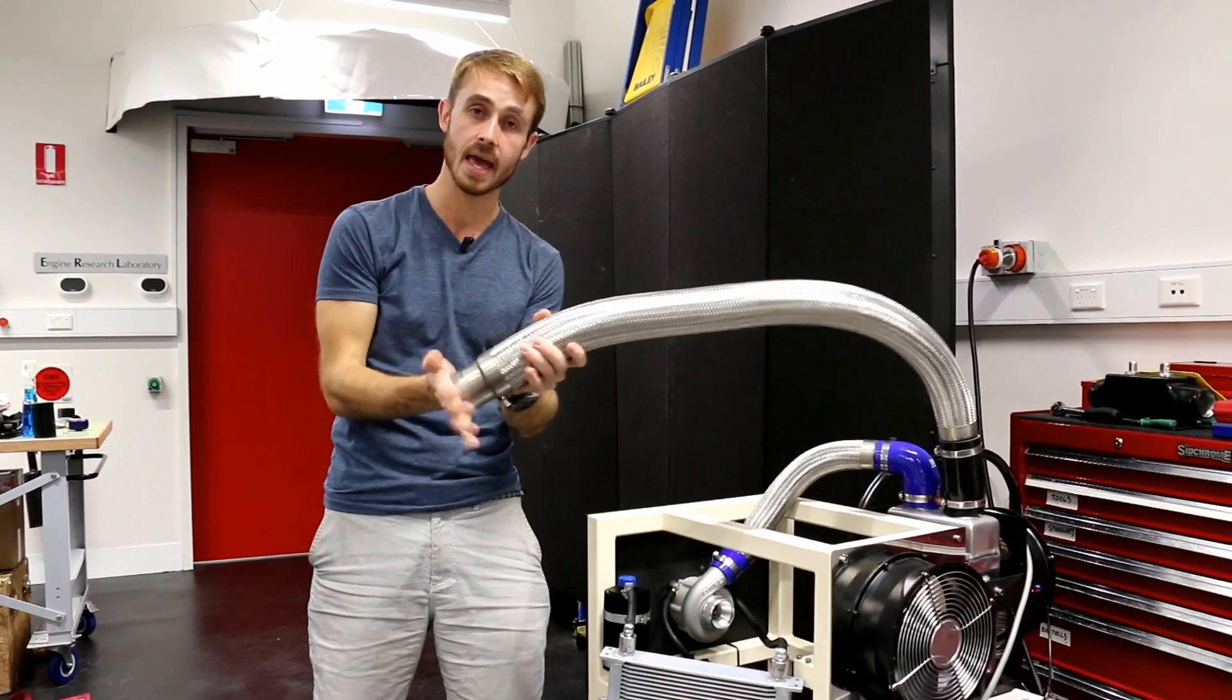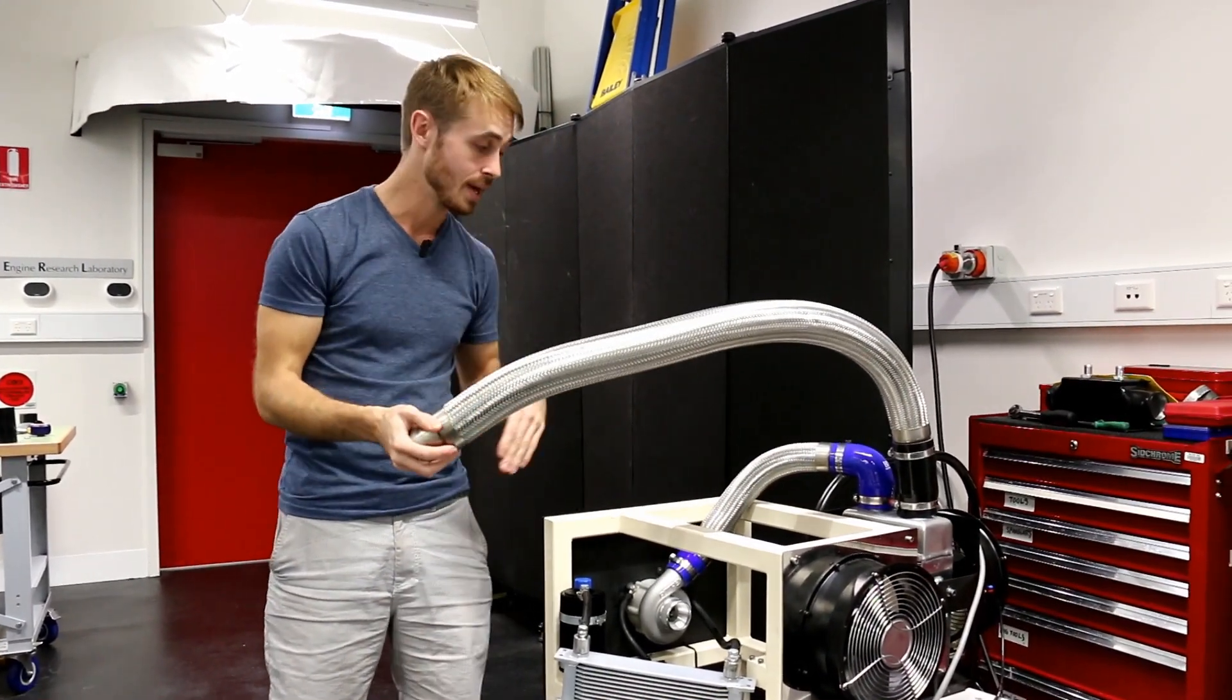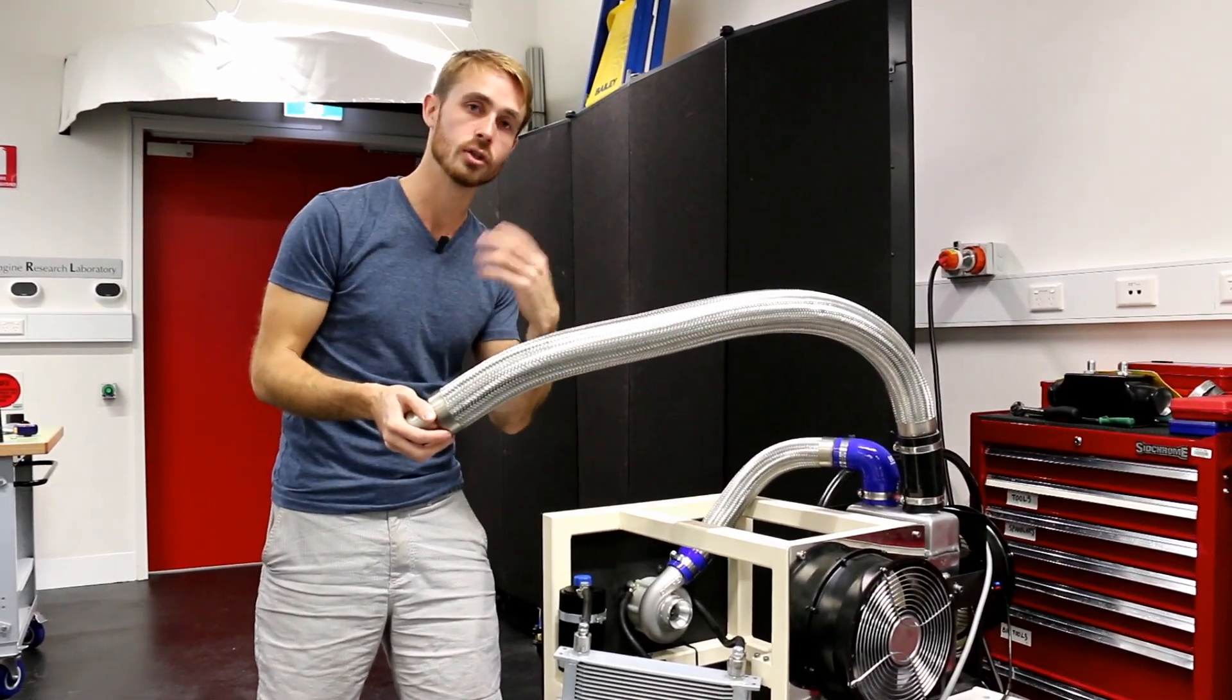So we can see that as I place my hand across here, I increase the pressure gradient across the turbo by blocking the outlet. Now increasing that pressure gradient causes the turbo to stall and make the doo doo doo noise.